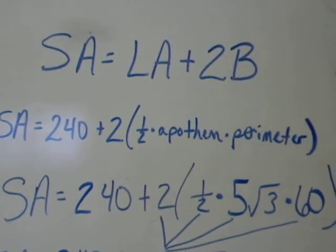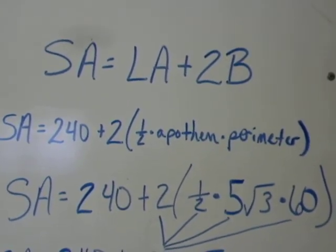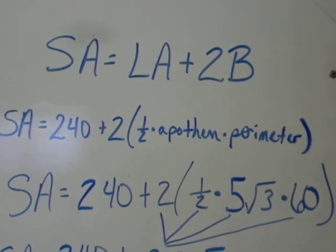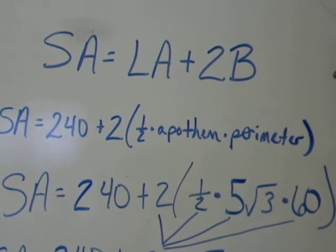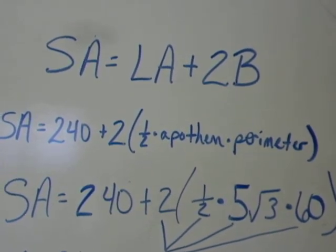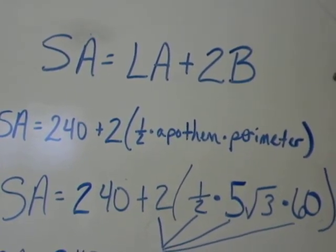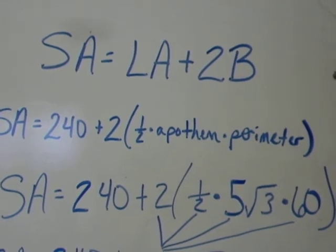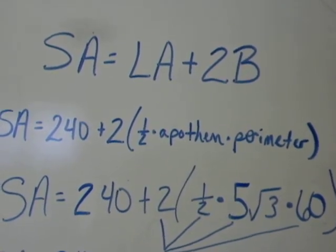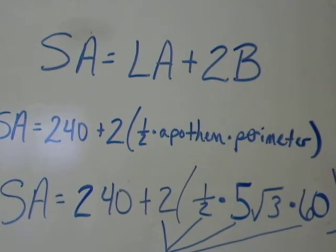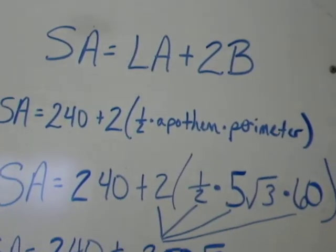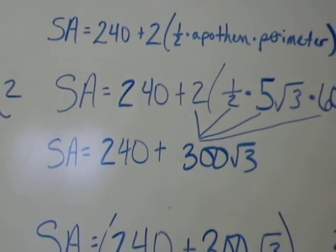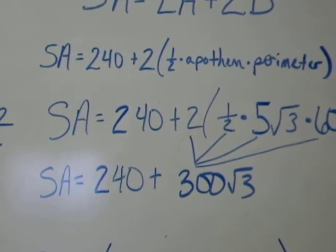So when we plug all that in, surface area is going to be equal to 240 plus 2 times the quantity, 1 half multiplied by 5 radical 3 multiplied by 60. Remember we want to go for an exact answer right now, so we're going to treat that radical 3 like it's a variable. We really only need to multiply the 2, the 1 half, the 5, and the 60. Well that gives me 300 and I bring down the radical 3.